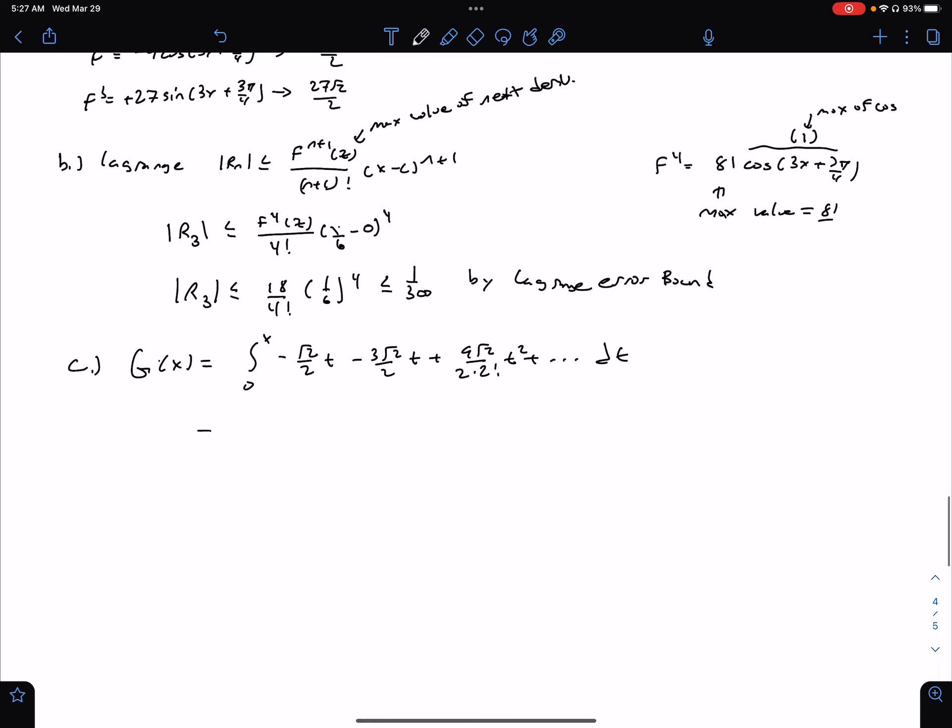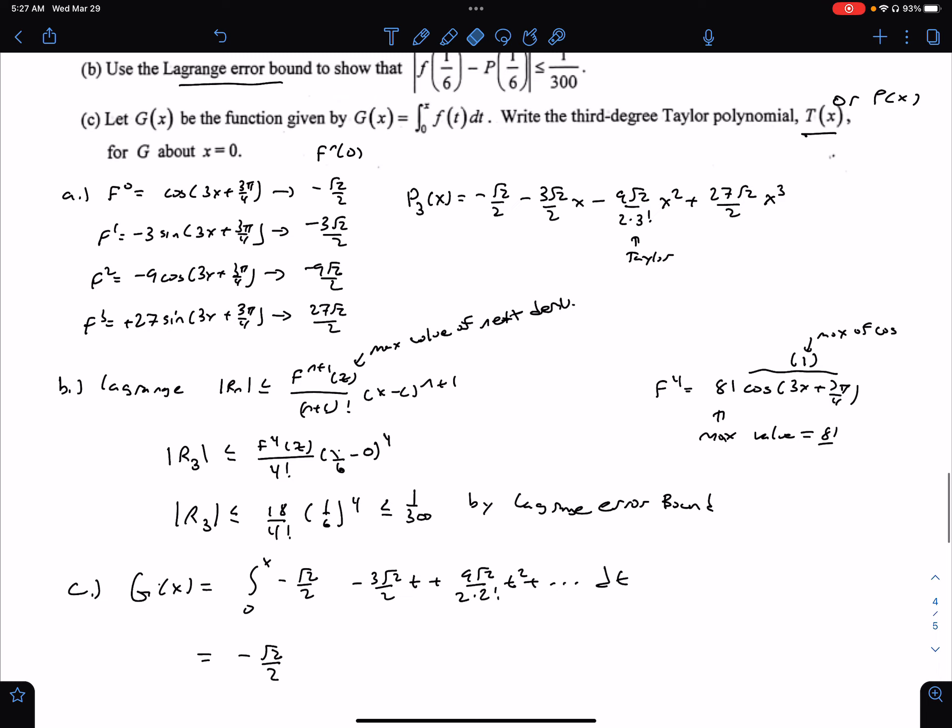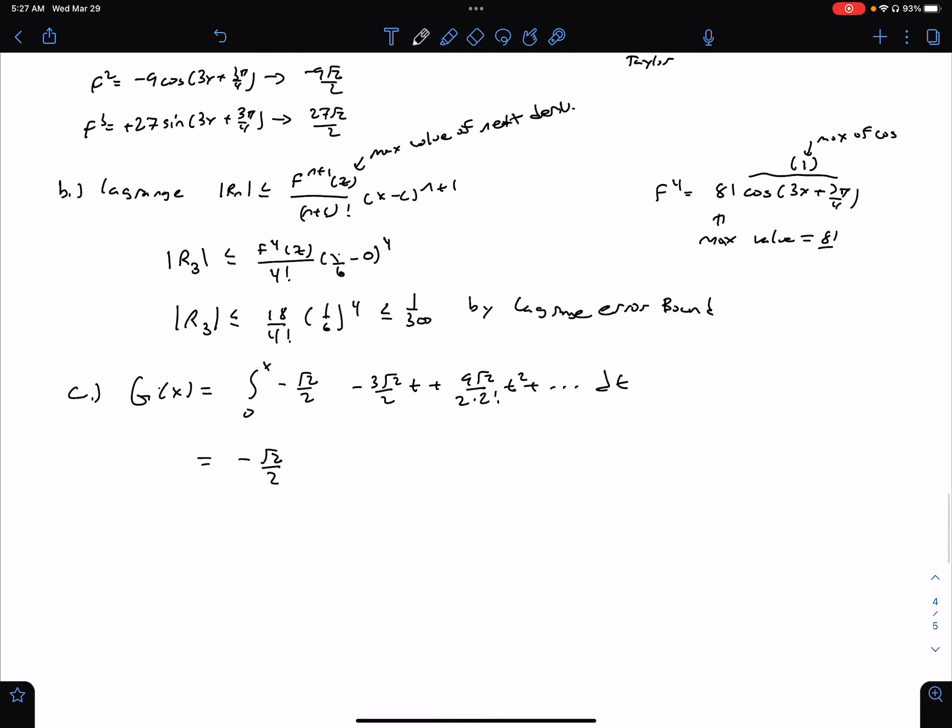dt. And now when we integrate this one, we're going to get negative √2/2. There should be no t on this one here. There should be no t. My original had no t on it, but I was integrating in my head, getting the answer right away. This becomes t minus 3√2/(2·2) t² plus 9√2/(2!·3) t³ plus dot dot dot,